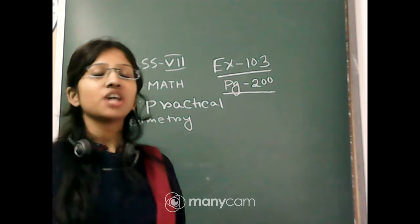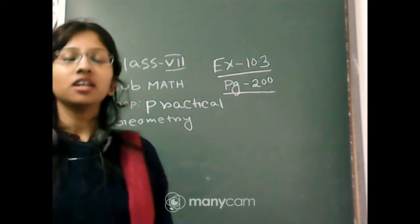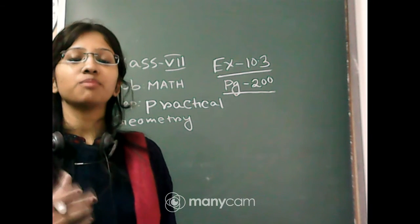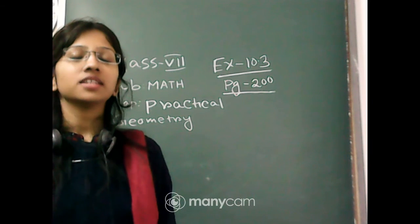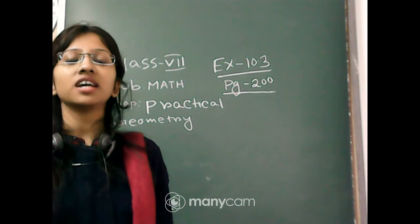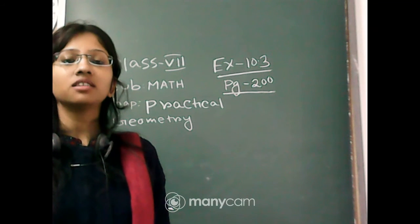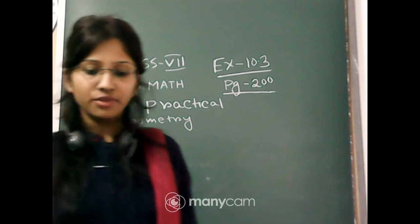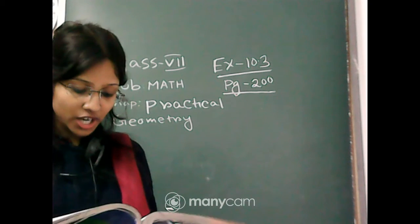In this chapter we will construct a triangle when the length of its two sides and the measure of one angle are given. Exercise 10.3.